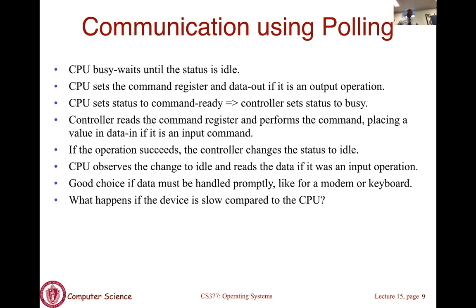We'll now talk about various ways IO communication occurs — specifically how device drivers actually work. There are three things we are going to look at. The first and simplest is implementing device drivers using polling. This is the simplest method where the CPU uses the four registers on that IO device for communicating with the device.